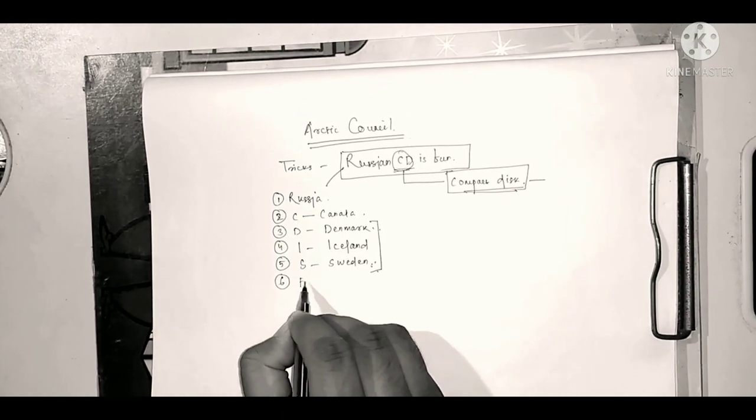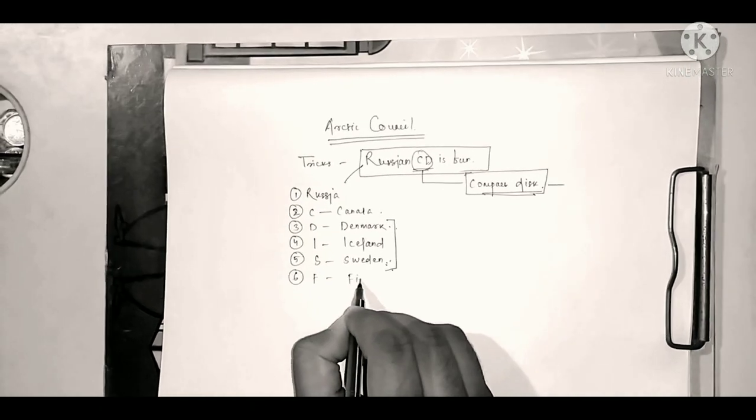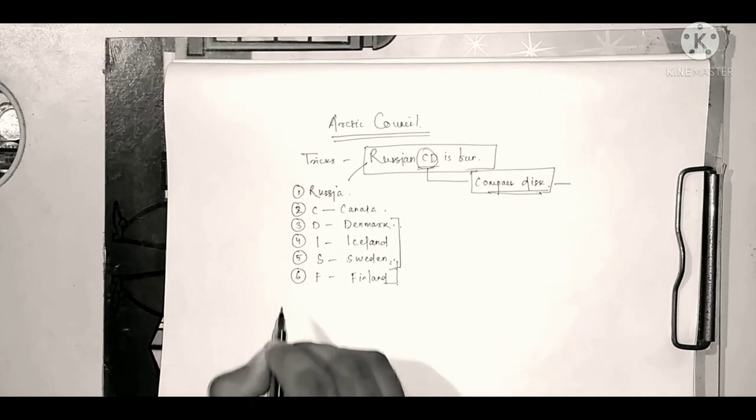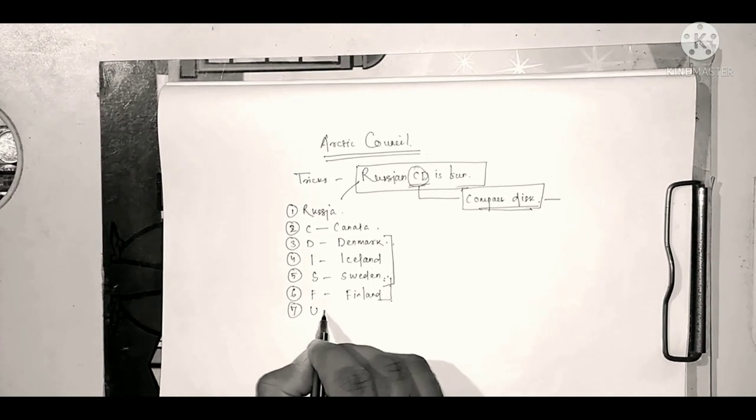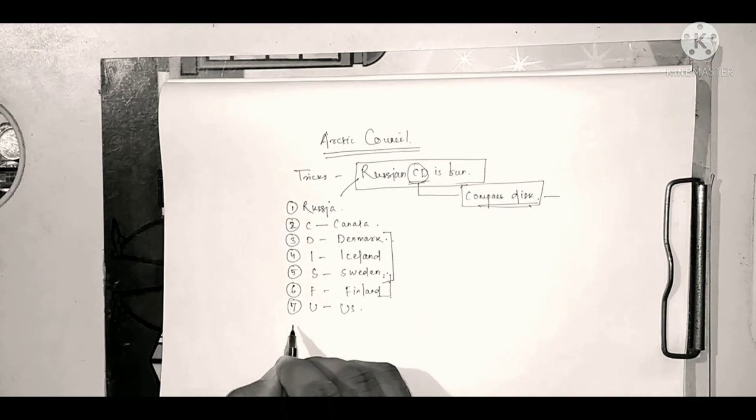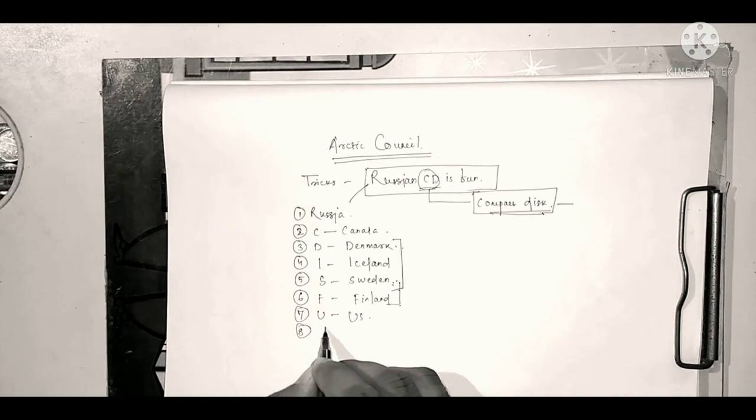Six, F for Finland. Finland also. And U for US. And N for Norway.